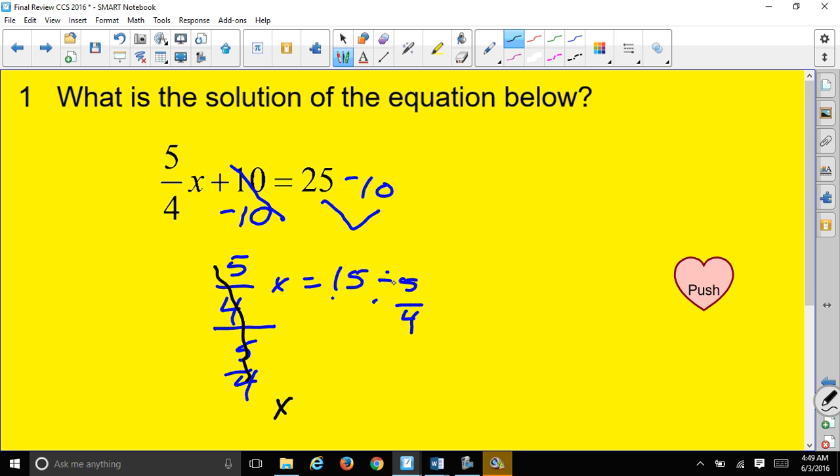5/4 is going to cancel out leaving me with just the x. But here I have 15 divided by 5/4. If you remember we have to multiply by the reciprocal, some people say KCF. That would be keep the first term, change to multiplication, and flip upside down the fraction. We have 15 times 4/5. 15 times 4 is 60, 5 times 1 is 5, so we have an improper fraction of 60/5 and we can reduce that down to 12.